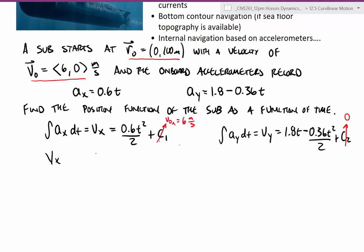So I could write those two functions now. V sub x is equal to 0.3t squared plus 6, that's in meters per second, and then v sub y is equal to 1.8 times t minus 0.18 times t squared, just dividing out those twos.